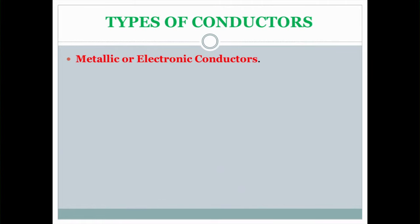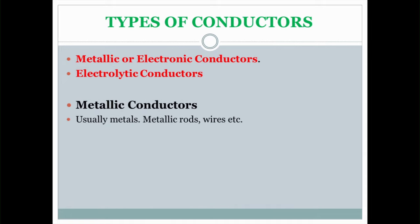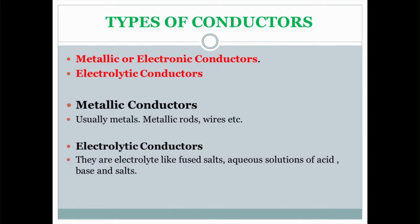There are different types of conductors, but they are basically divided into two types. First is the metallic conductor, also called the electronic conductor. Second is the electrolytic conductor. Metallic conductors are usually metals — metallic rods or wires. Electrolytic conductors are electrolytes like fused salts and aqueous solutions of acids, bases, and salts.